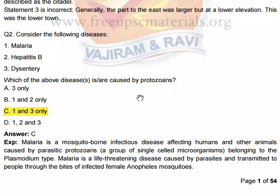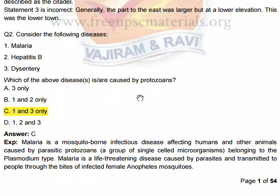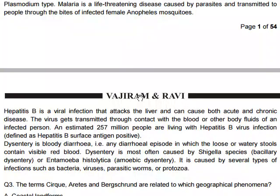Malaria is a mosquito-borne infectious disease affecting humans and other animals, caused by parasitic protozoa — single-celled microorganisms belonging to the Plasmodium type. It is a life-threatening disease transmitted through the bites of infected female Anopheles mosquitoes. Dysentery is also caused by protozoa, but Hepatitis B is a viral infection.